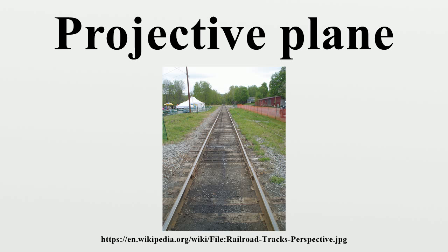The affine planes formed by the removal of different lines of the projective plane will be isomorphic if and only if the removed lines are in the same orbit of the collineation group of the projective plane. These statements hold for infinite projective planes as well. Construction of projective planes from affine planes: the affine plane K2 over K embeds into KP2 via the map which sends affine coordinates to homogeneous coordinates. The complement of the image is the set of points at infinity, constituting a line in KP2 called the line at infinity.